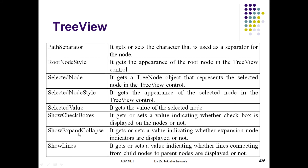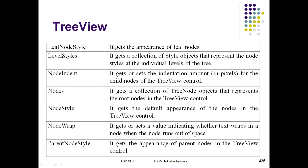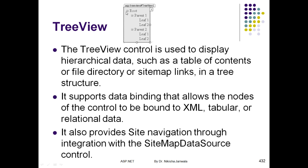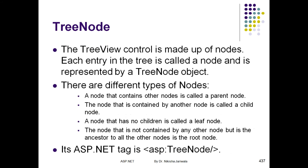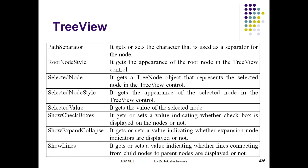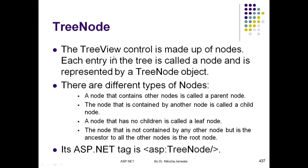ShowExpandCollapse — if we need to show the expand and collapse buttons, we can set it to true. Then on the root we will get a plus or minus to expand or collapse nodes. ShowLines — if we set the ShowLines property to true, connecting lines between nodes will be displayed.